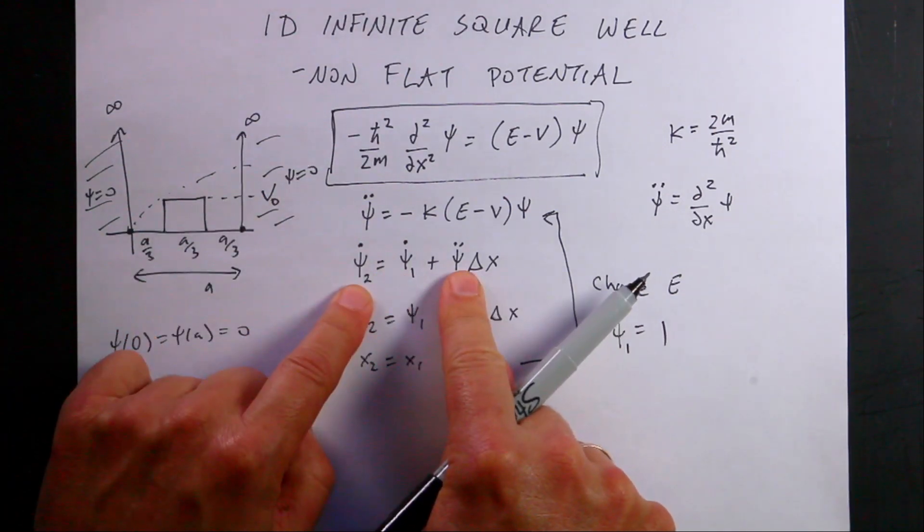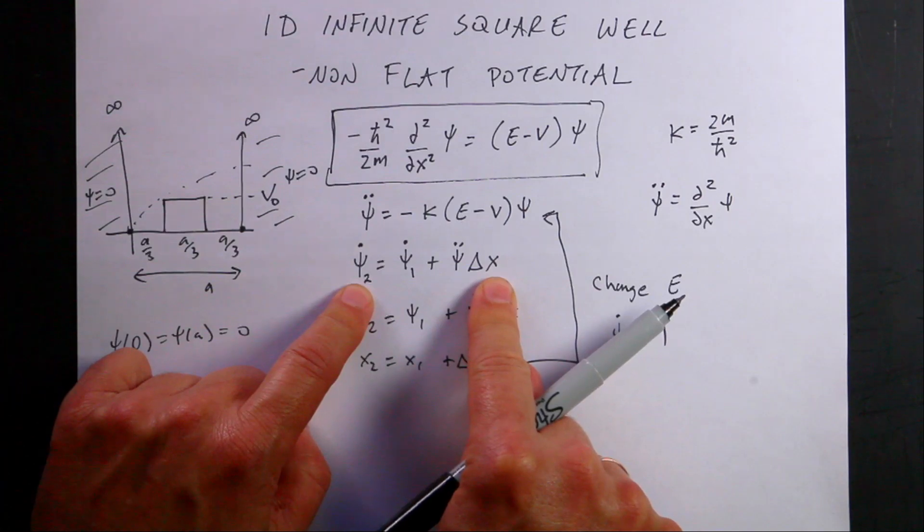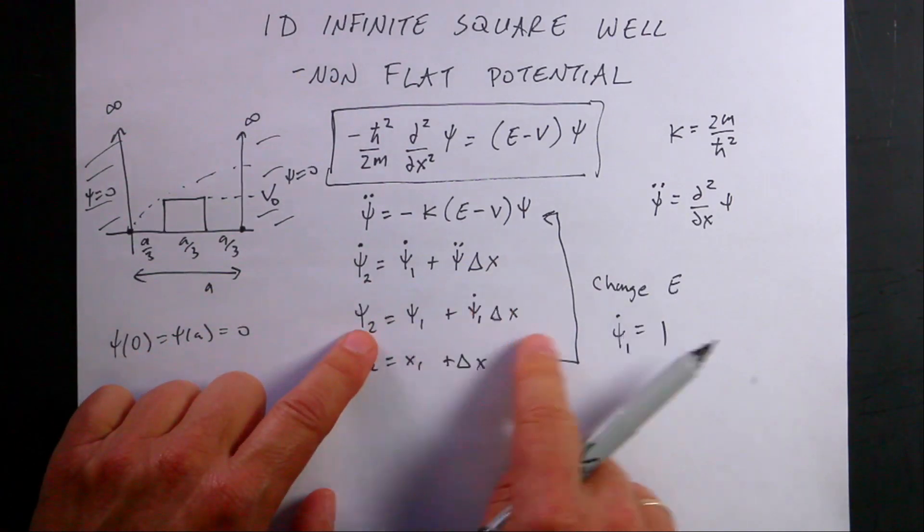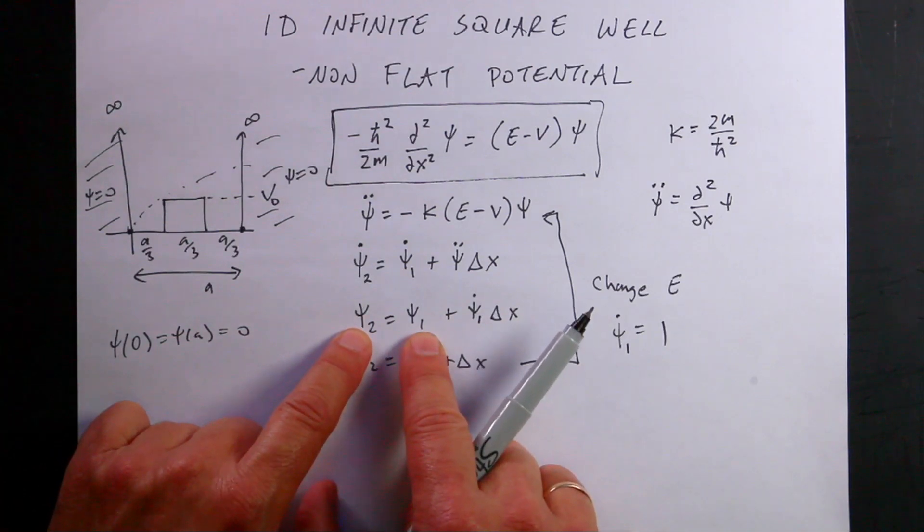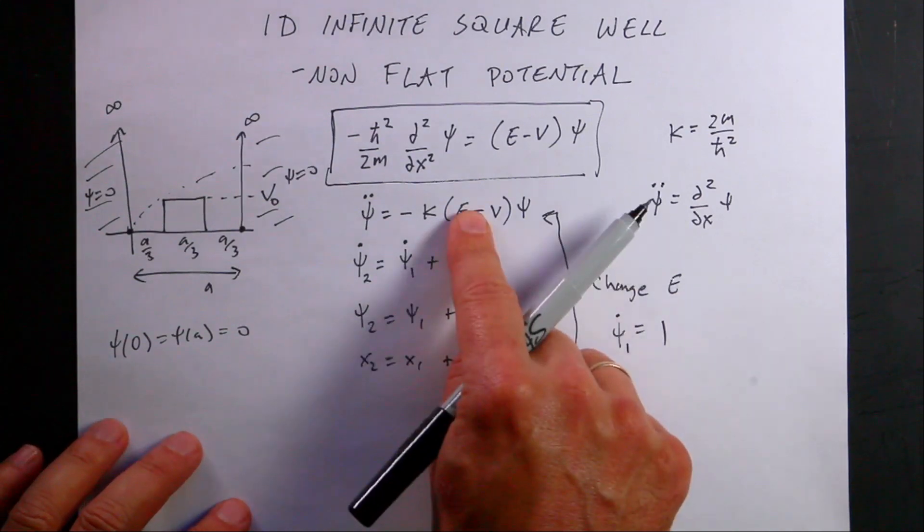So then I can calculate the derivative at the end of the space interval. Then I can go down here and use the definition of psi dot to calculate the psi 2 at the wave function at the end of the interval. And then I can update x and then repeat the whole thing. And then I will get to the end and I'll have a wave function.